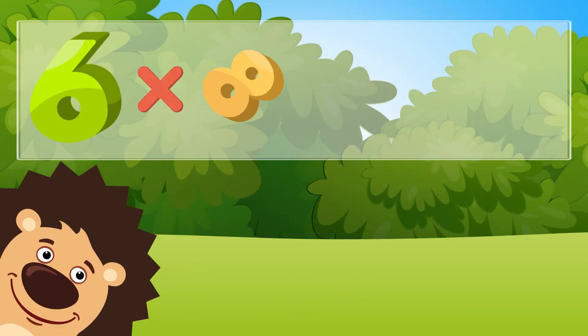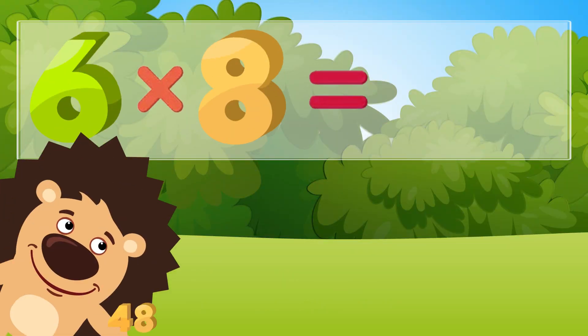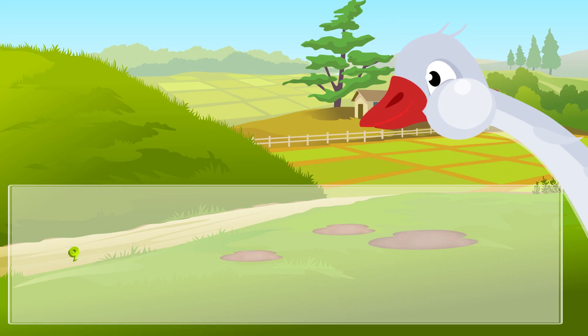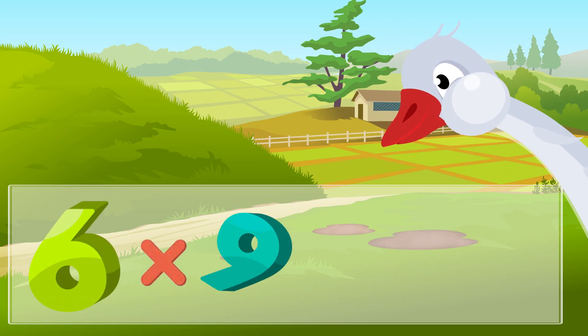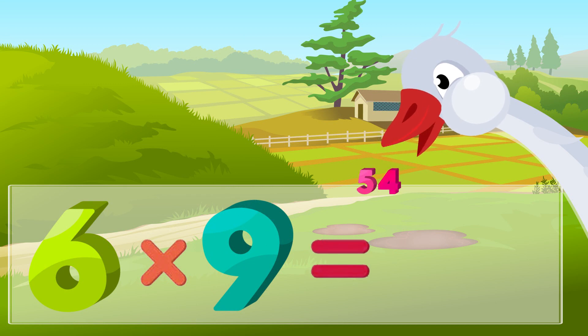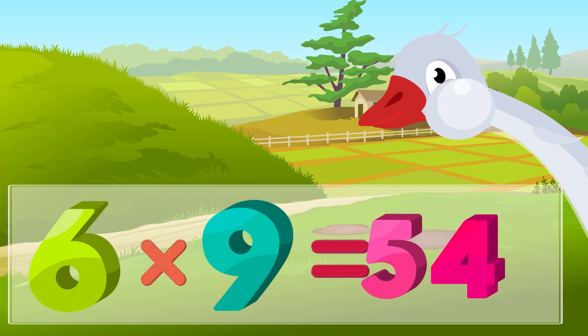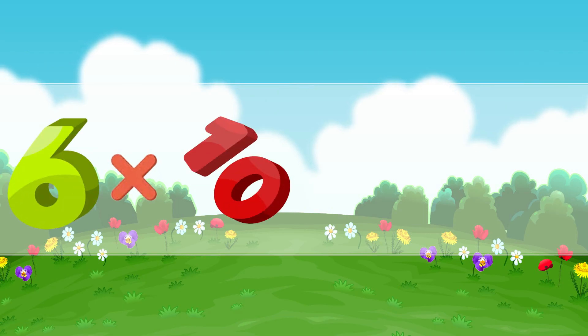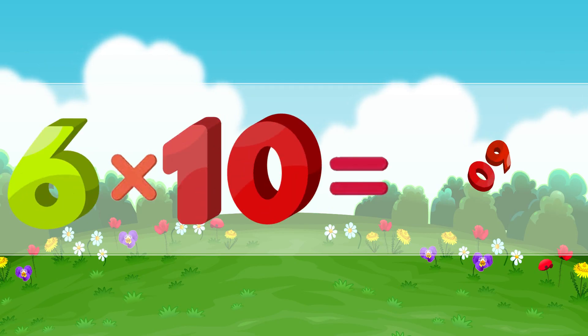Six times eight is forty-eight. Six times nine is fifty-four. Six times ten is sixty.